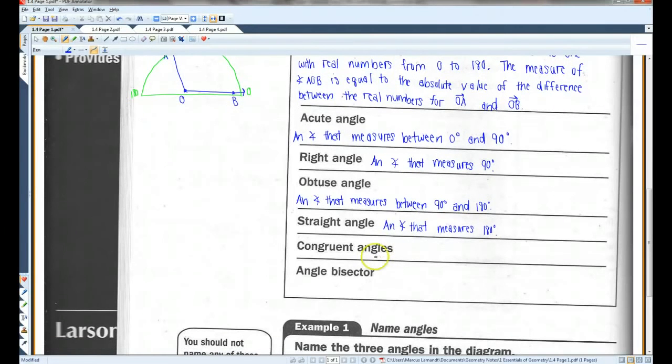Congruent angles, kind of like congruent segments, these are angles that have the same measure. An angle bisector is a ray that divides an angle into two angles that are congruent. I'll draw a picture of that. So, for example, in this picture, if this ray cuts this angle exactly in half, this is an angle bisector. These arcs indicate that these two angles are congruent. Sometimes arcs are drawn like this. Sometimes you'll see it drawn like this, an arc with a little dash in it, kind of like the dashes in the segments. But you don't need the dash. Sometimes I draw it, sometimes I don't.